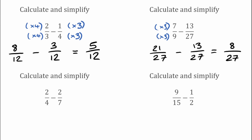For this next example we've got 2 over 4 take away 2 over 7. Our lowest common multiple of 4 and 7 would actually be 28, so we're going to have two fractions over 28. To get 28 on the bottom I'd have to multiply that 4 by 7, which means I'm also going to multiply the top by 7: 2 times 7 gives 14, so that would be 14 over 28.